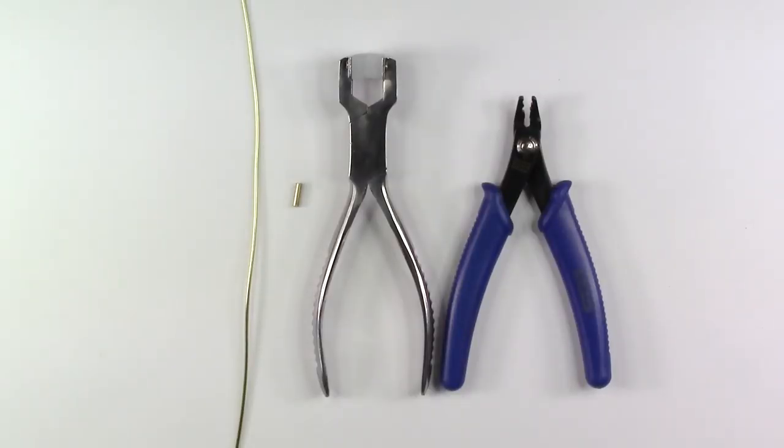To create your bangle you will need eight and a half inches of 14 gauge wire, a crimp connector, bracelet bending pliers, and a standard crimper tool.